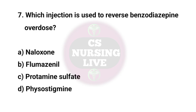Question No. 7. Which injection is used to reverse benzodiazepine overdose? Right answer is B. Flumazenil.